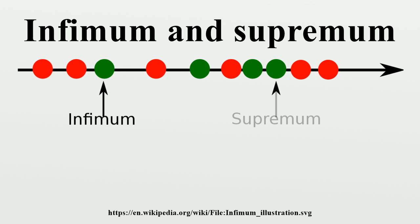Examples — Infima: The infimum, or greatest lower bound, of the set of numbers {2, 3, 4} is 2. The number 1 would be a lower bound but not the greatest lower bound, and hence not the infimum. If a set has a smallest element, as in the first example, then the smallest element is the infimum for the set. As the last three examples show, the infimum of a set does not have to belong to the set.